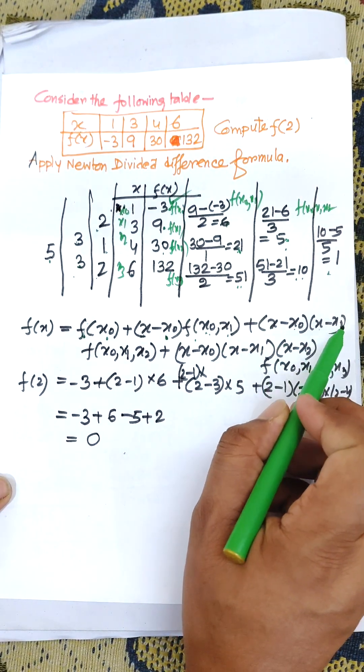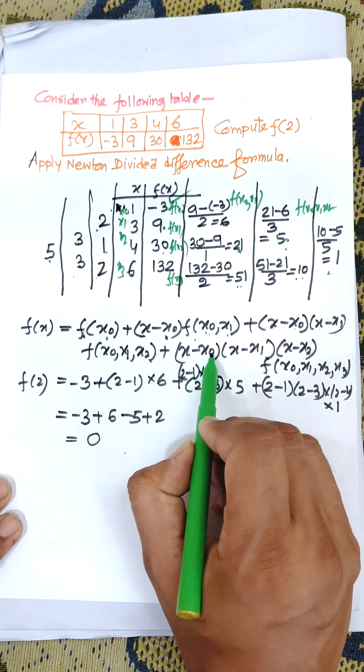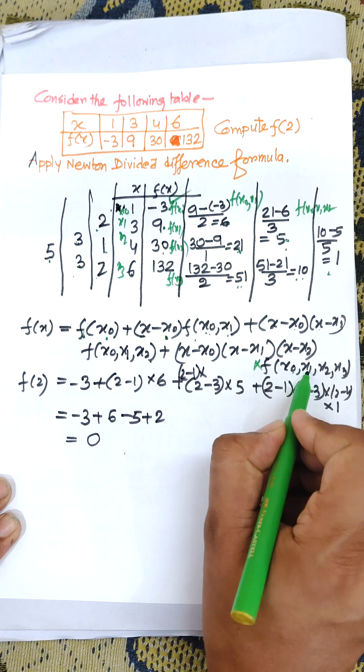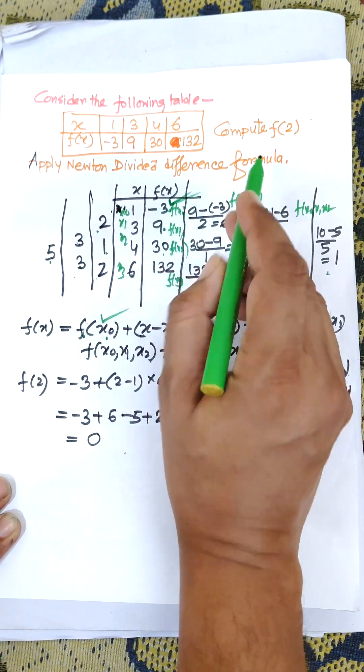The next formula is x minus x0 times x minus x1 times f(x0, x1, x2) plus x minus x0 times x minus x1 times x minus x2 times f(x0, x1, x2, x3).